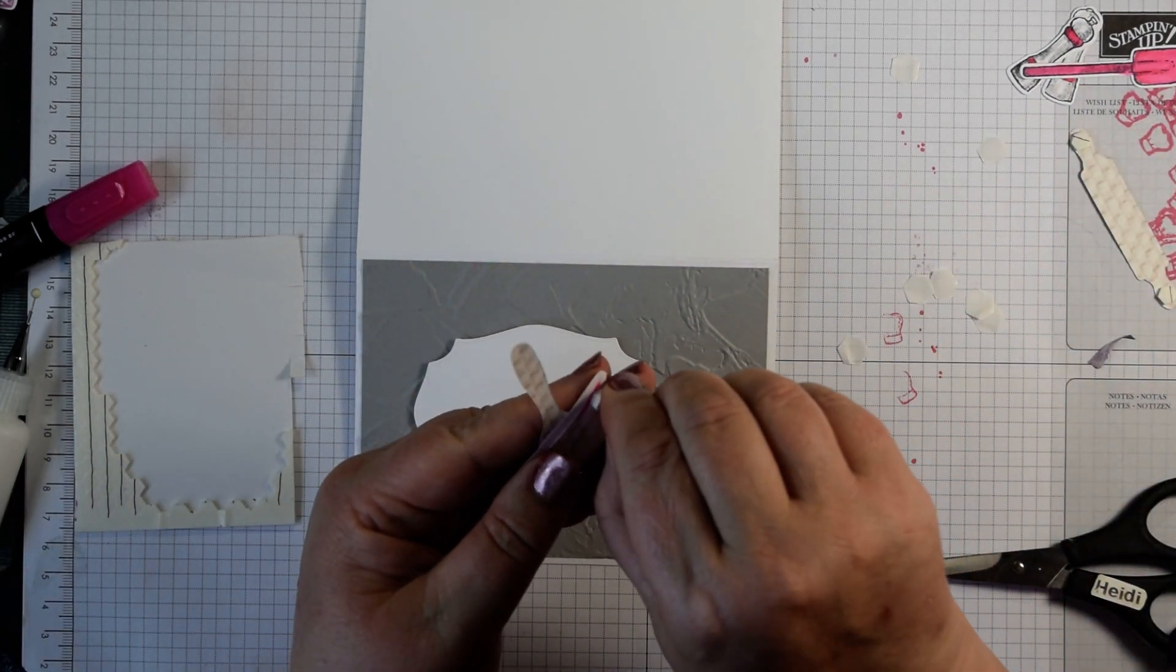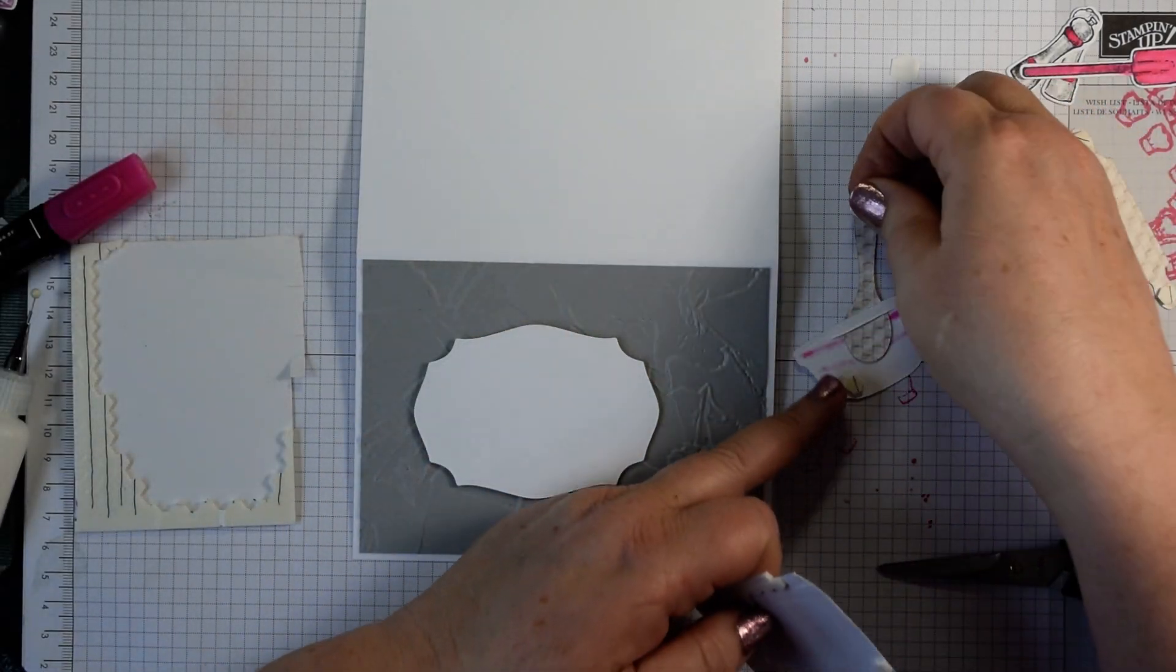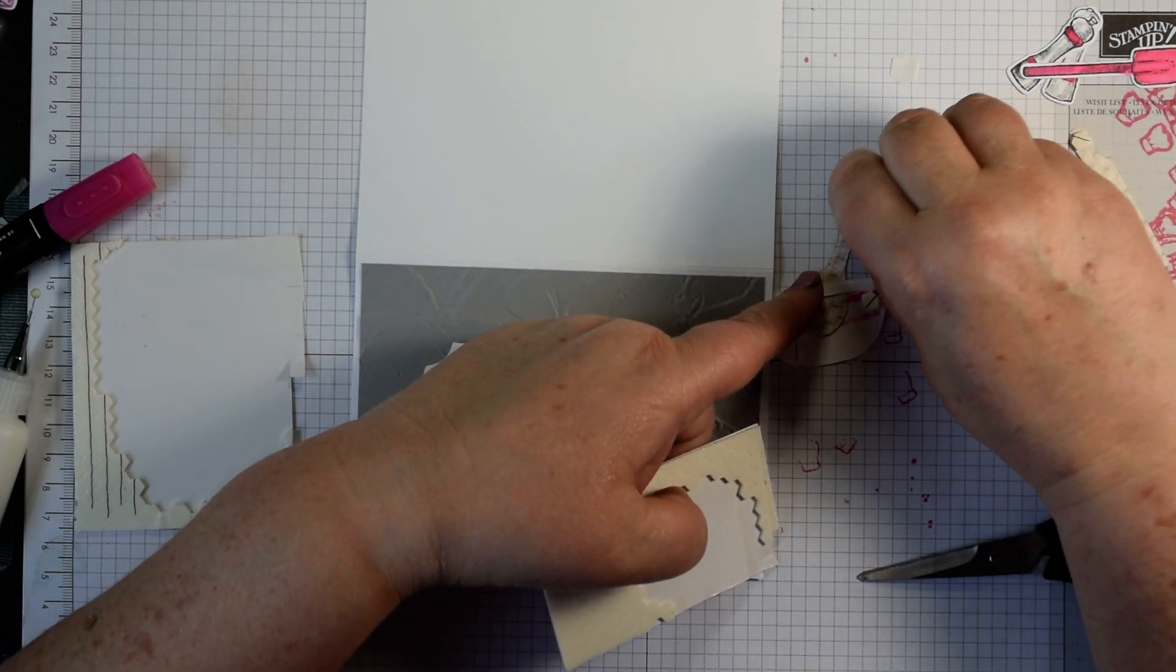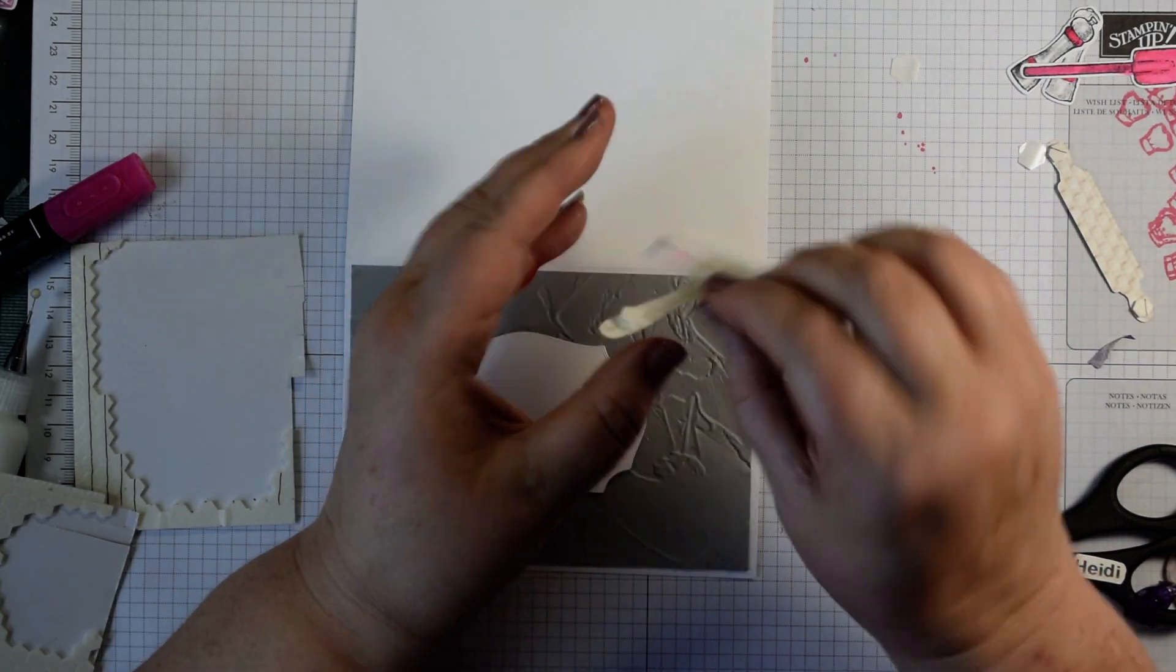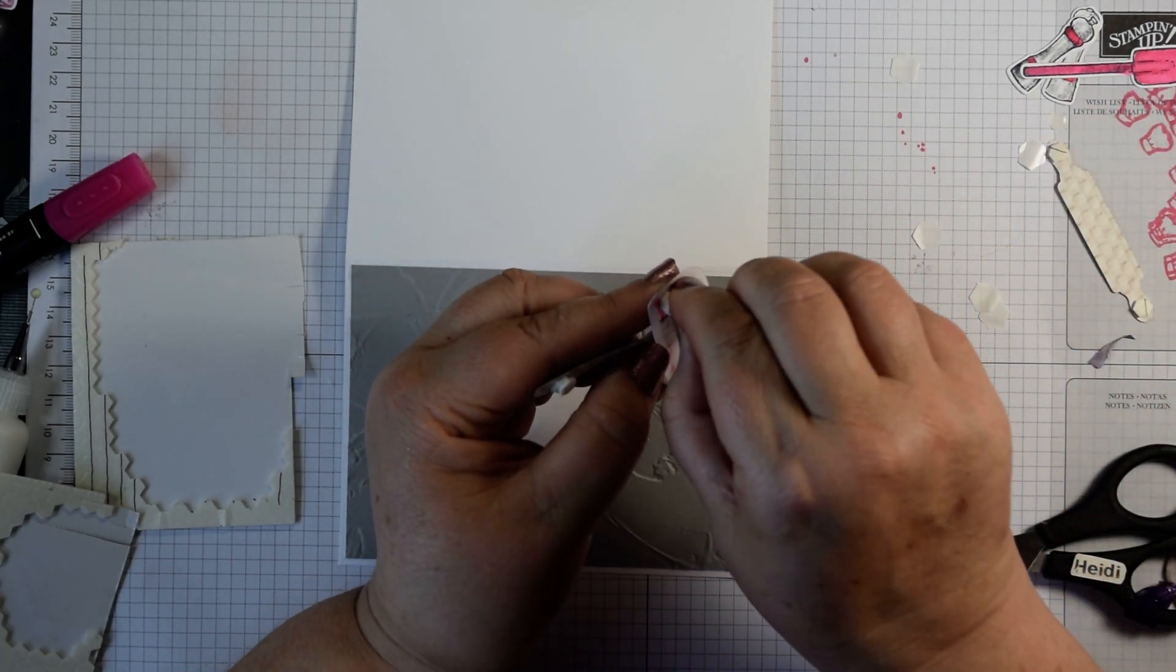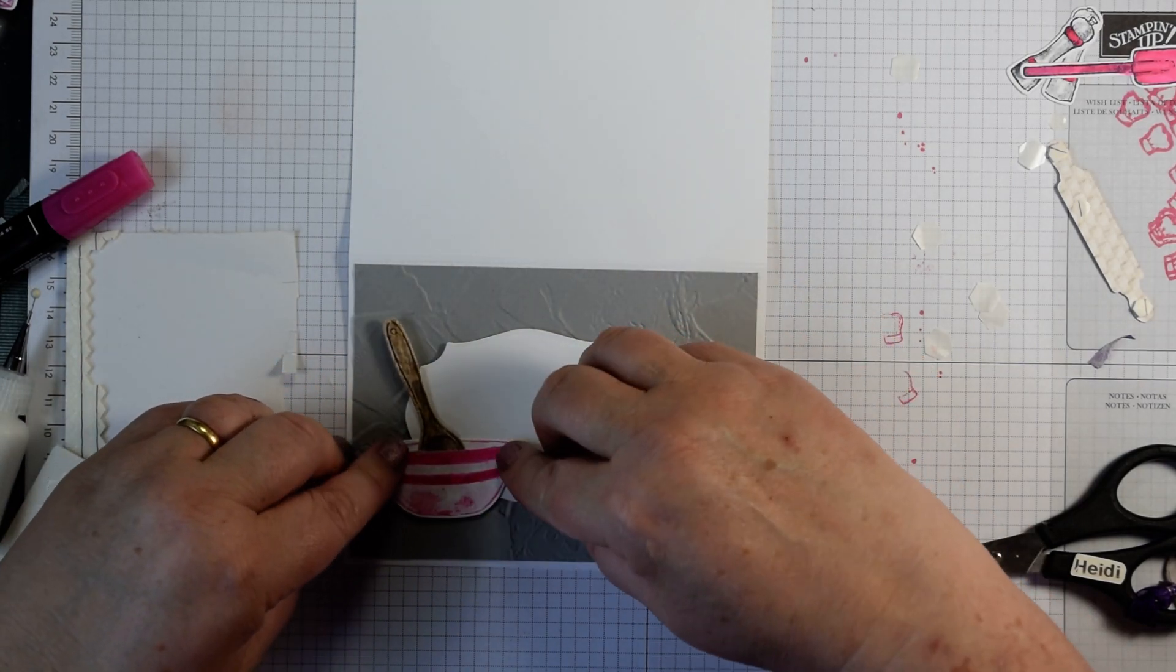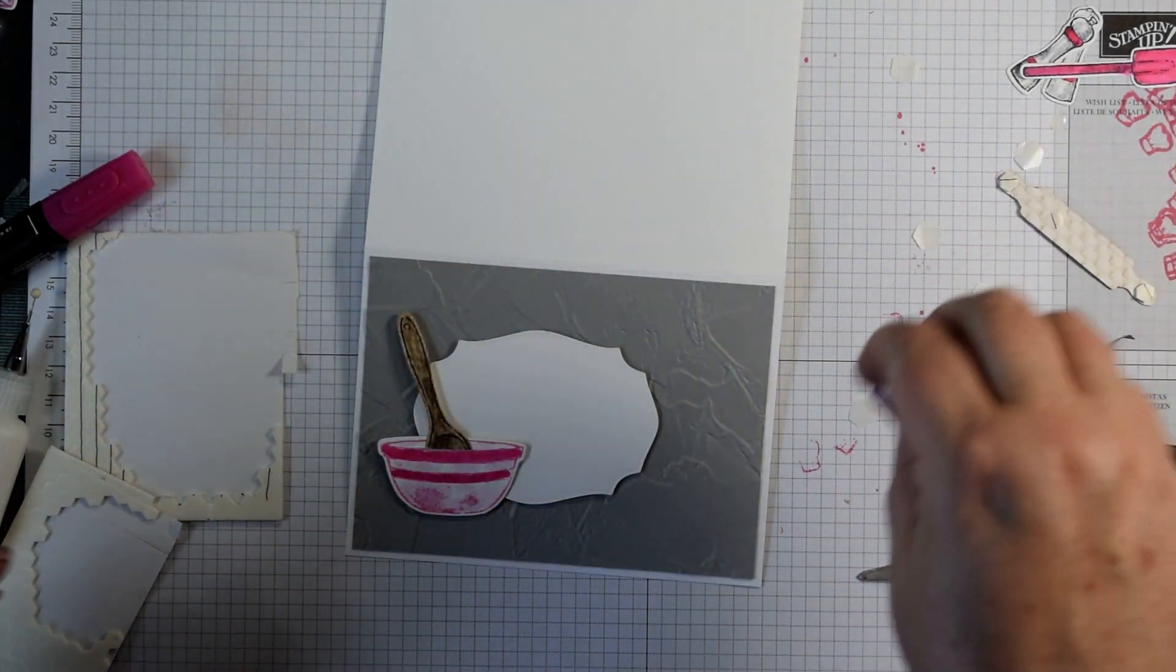Before I do that I must remember to add a couple of dimensionals onto the back of the spoon as well. Again these will need to be sort of double layered up as well just to support that end there. Take the backings off your dimensionals and that can then go straight onto the edge of our label. You can see there that's lifted up, not quite lifted up one layer, you just need to pop one underneath the edge there.